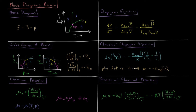The slope of the line when plotting ln(P) versus 1/T is the negative enthalpy of vaporization divided by the gas constant. So if we measure the boiling point at two different pressures and plug those values into the Clausius-Clapeyron equation, we can calculate the enthalpy of vaporization from those two measurements.